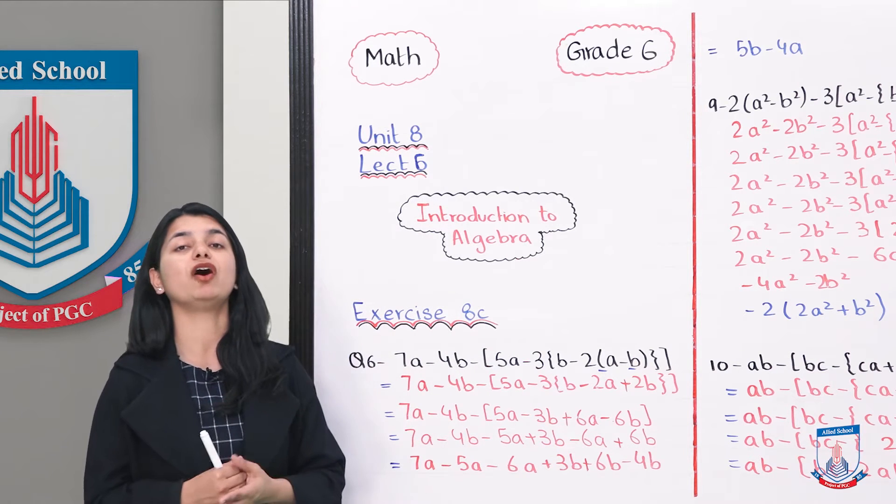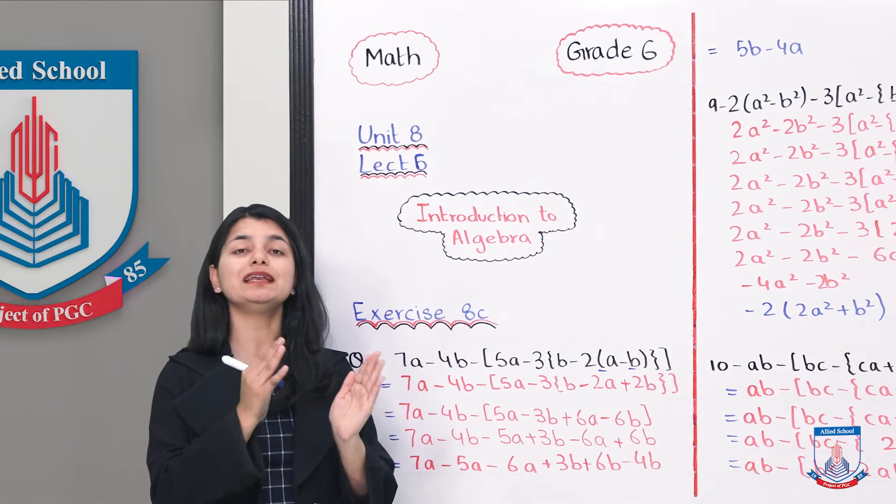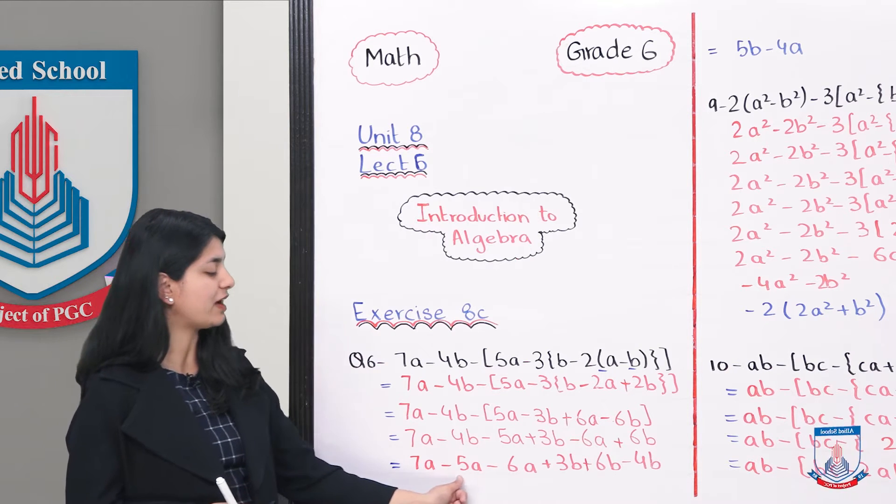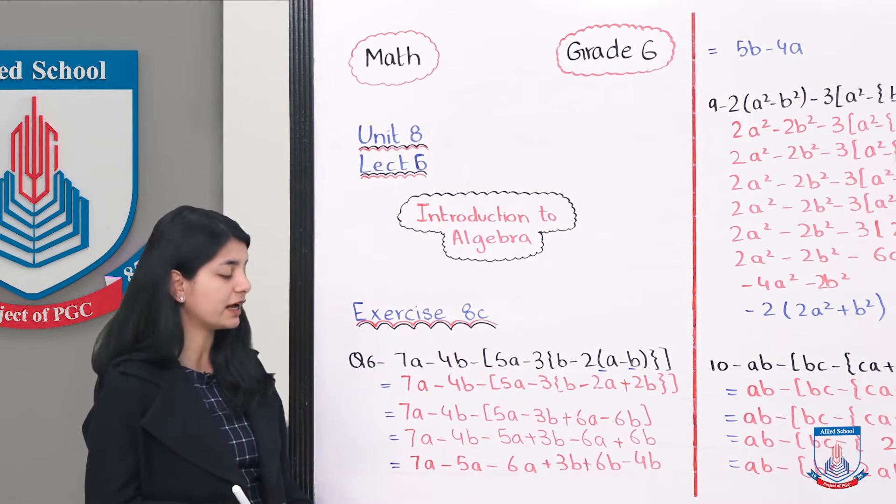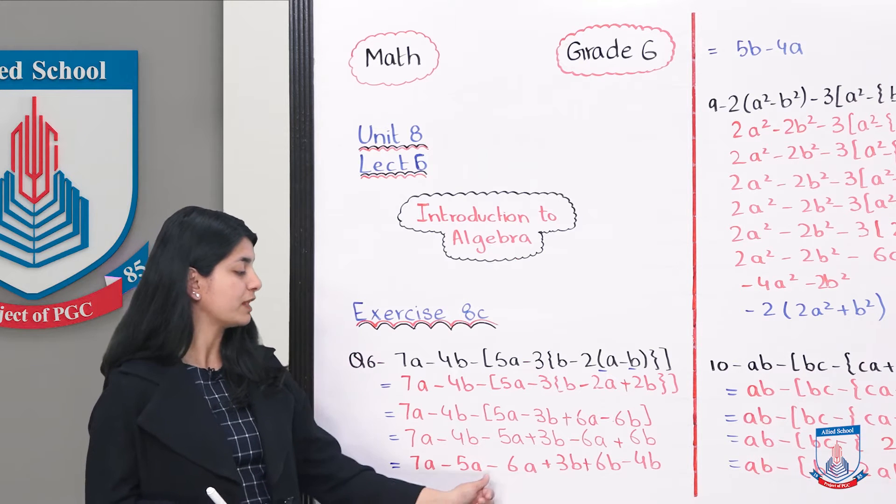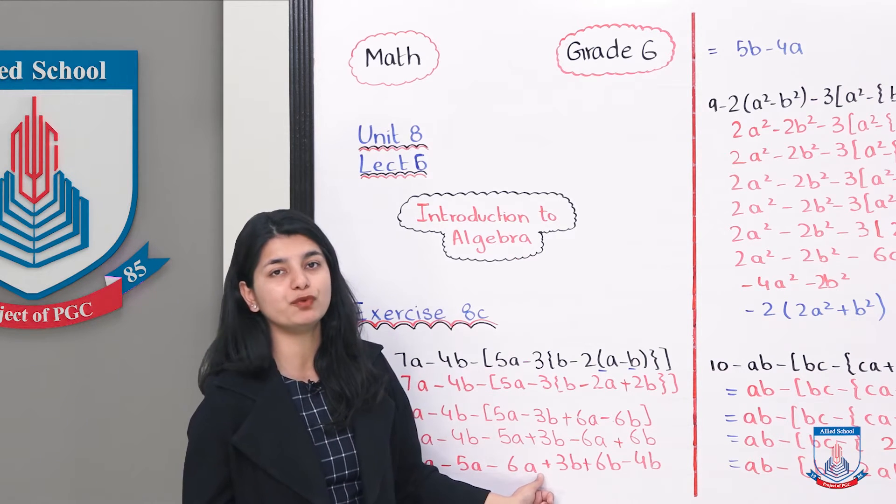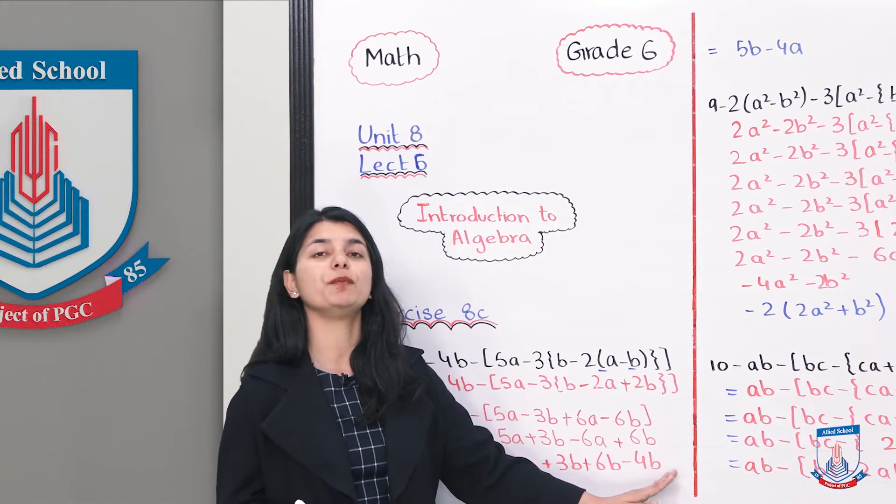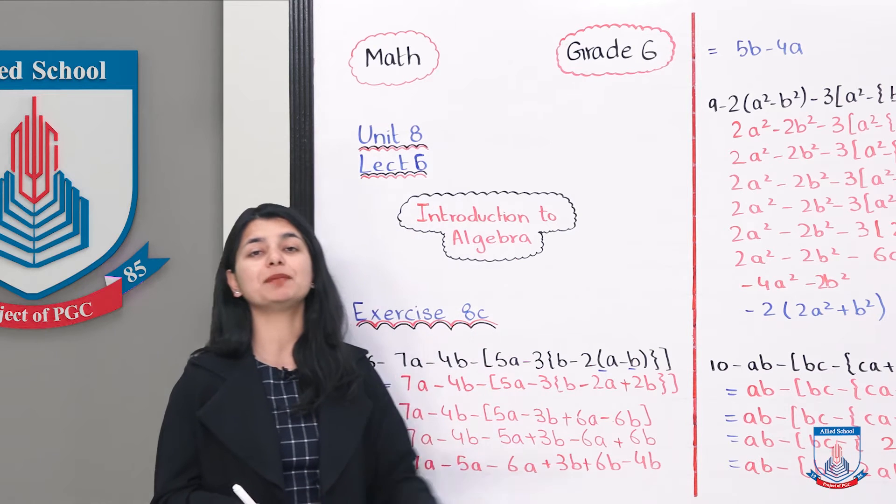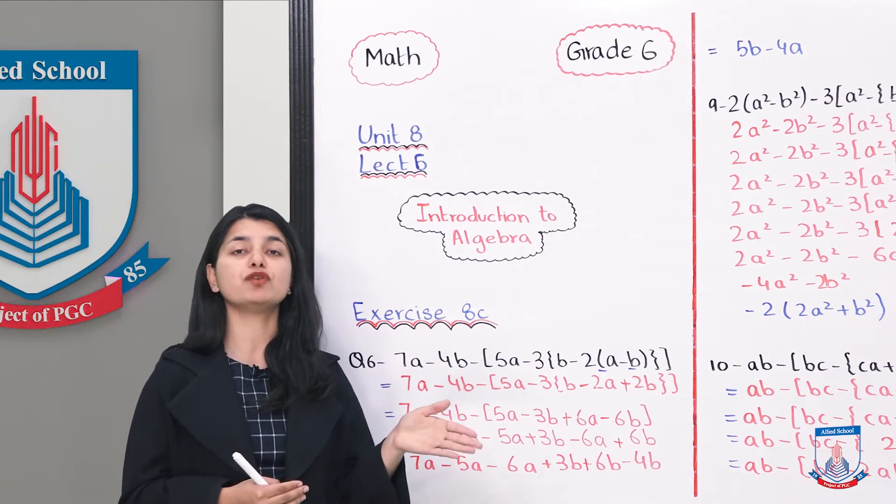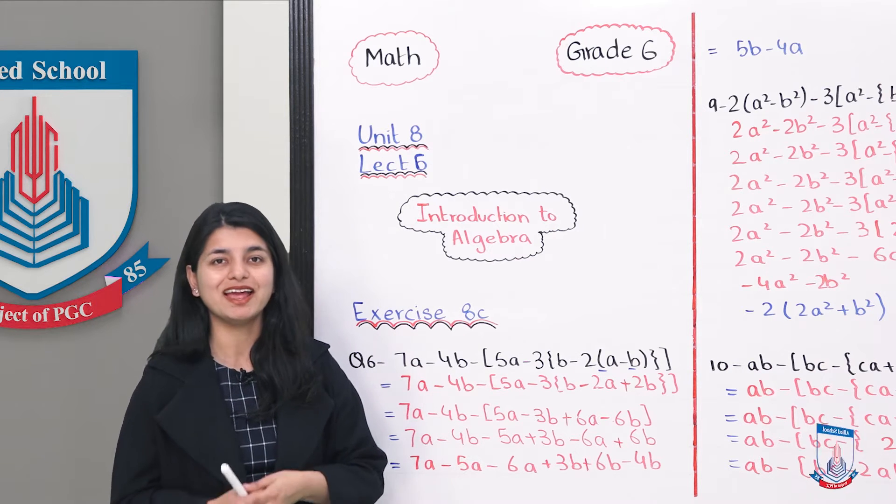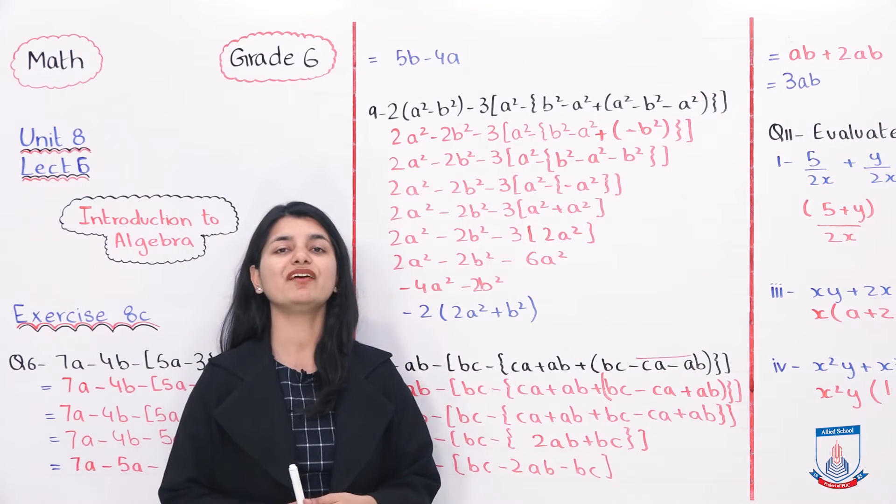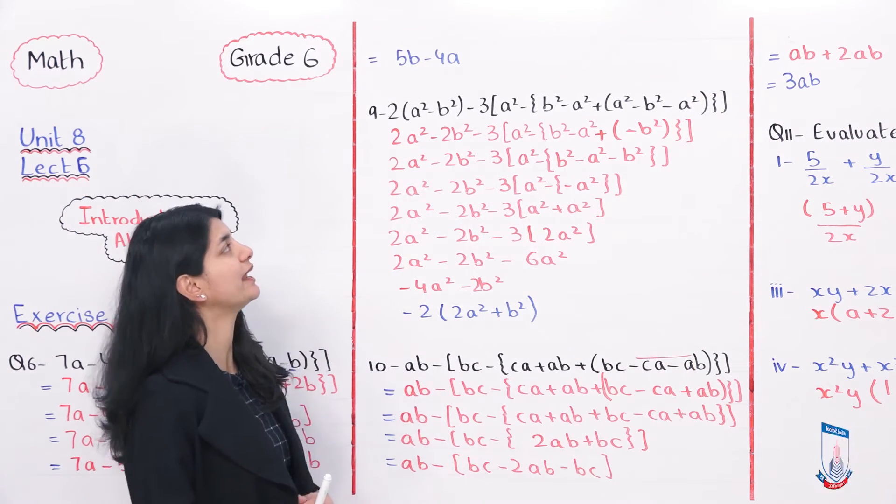The final stage is putting like terms together. Jo terms ek jaisi hai unko ek saath likhain, jaisi ki 7A, 5A, 6A ek taraf aagain. 7A minus 5A is 2A. And 2A minus 6A would then be minus 4A. So ye minus 4A ho gaya, 3B plus 6B is 9B, minus 4B is 5B. So aapka jawab kya aagaya? Minus 4A and 5B. So you can write it as 5B minus 4A. Let's go see the answer. So we have reached our answer 5B minus 4A.